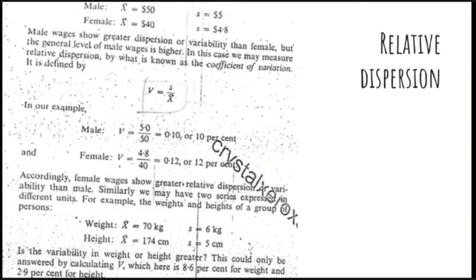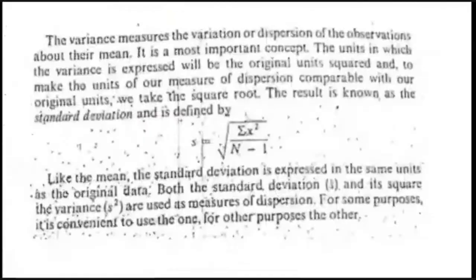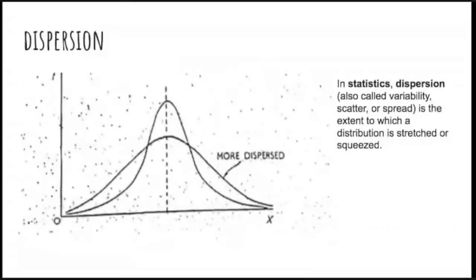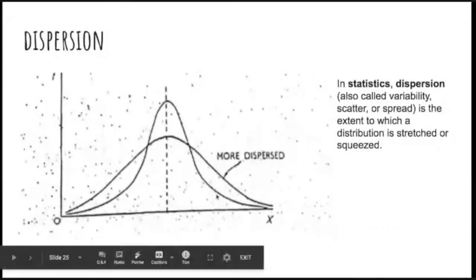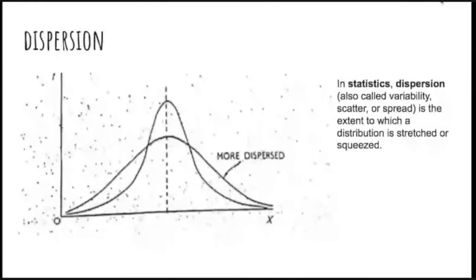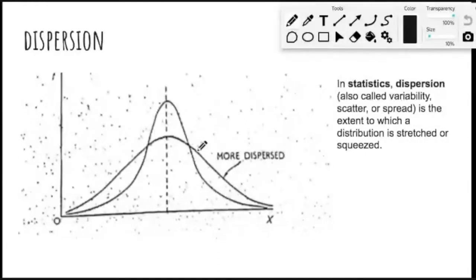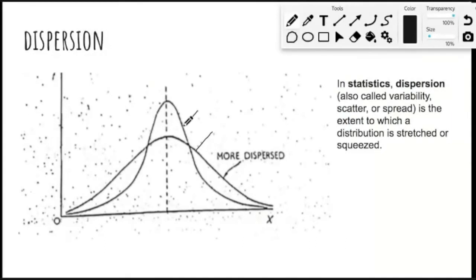Dispersion is basically that your distribution is more varied and spread out. We have seen this curve, and this curve represents more dispersion because this is the value of average, and from average your data is spread out. That's why we call it dispersed, as compared to this distribution. Then we talked about different measures of how we can measure dispersion.